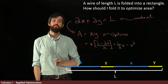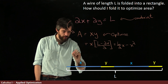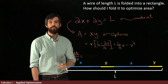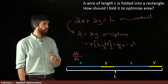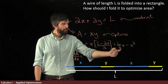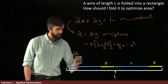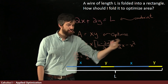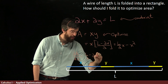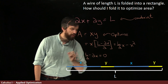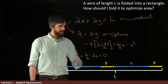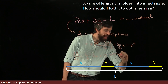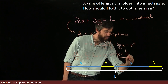Now I can compute the derivative. The derivative of area with respect to X is: the derivative of (L/2)·X is L/2, and the derivative of −X² is −2X. Setting this equal to zero and rearranging, X equals L divided by 4.